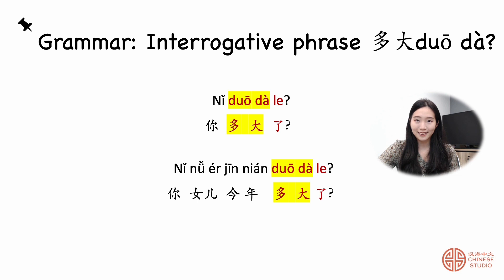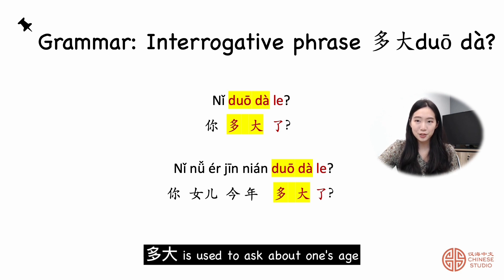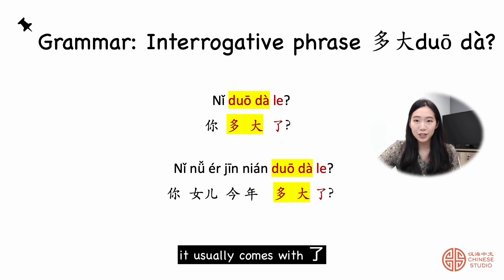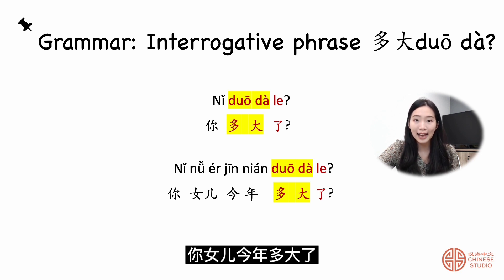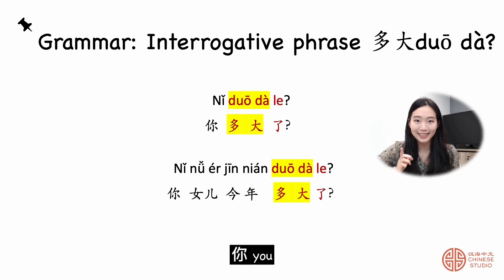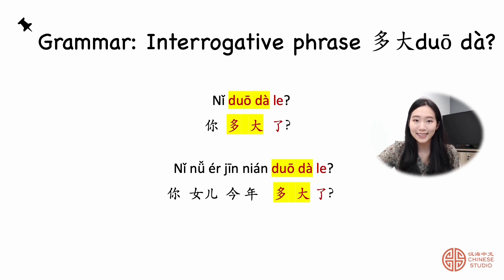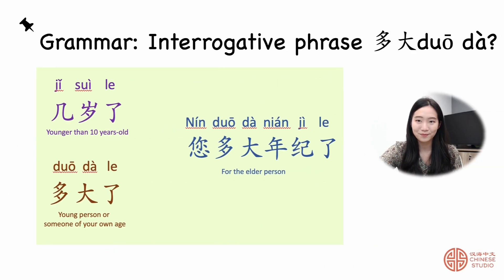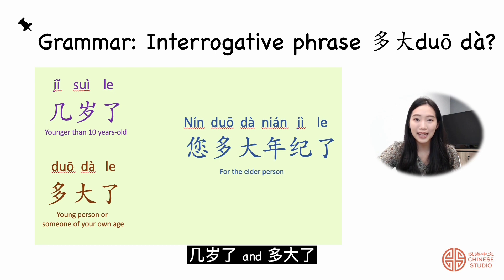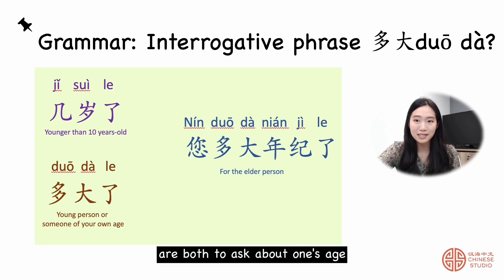Grammar point three: 多大 is used to ask about one's age, and it usually comes with 了. For example: 你多大了? 你女儿今年多大了? Both 几岁了 and 多大了 are used to ask about someone's age.